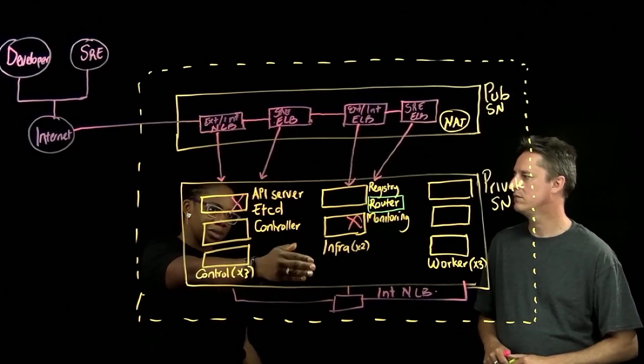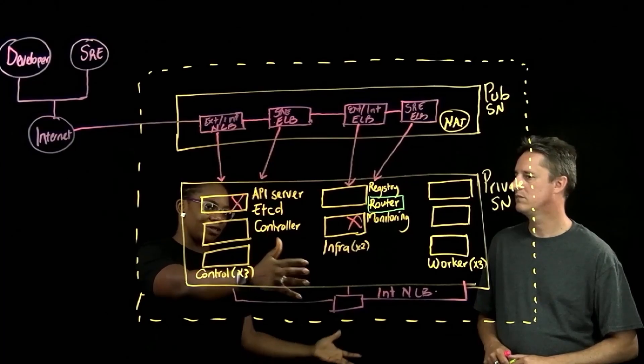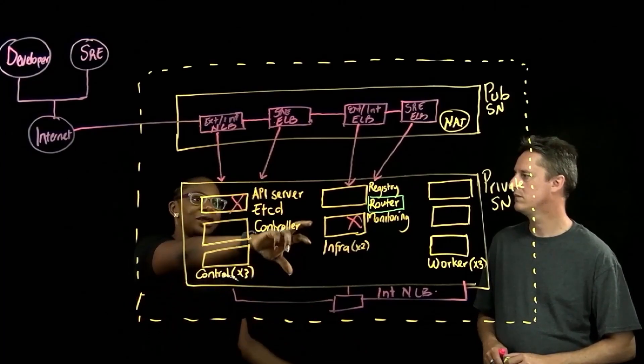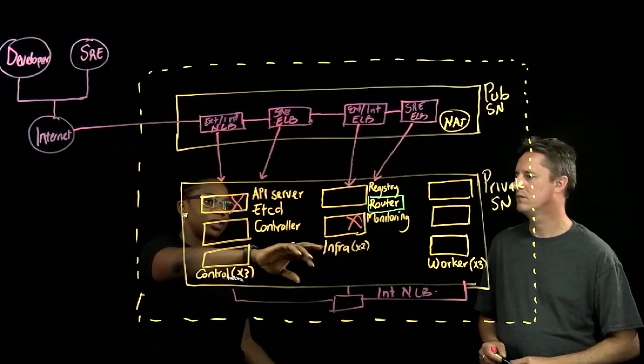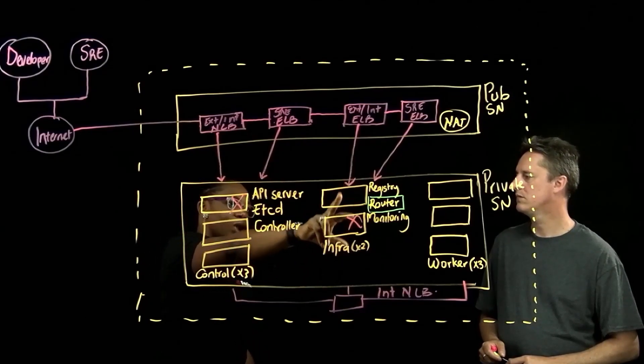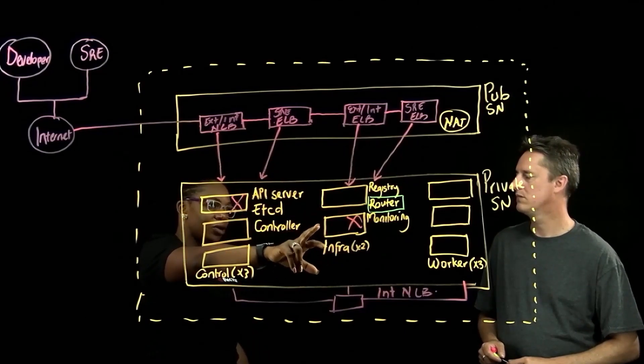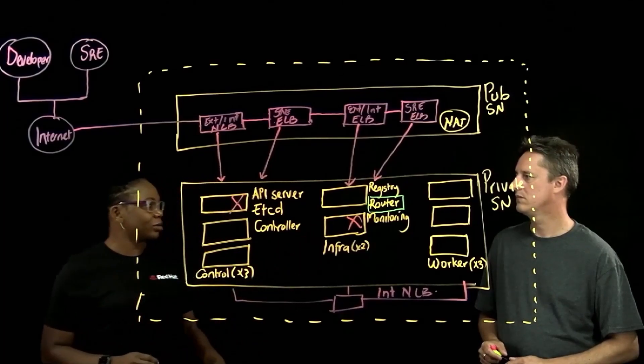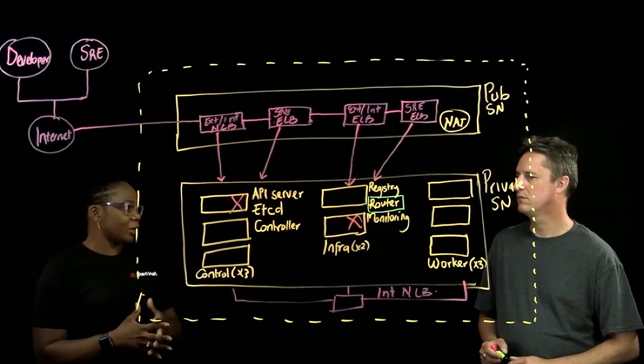So you really don't get to know that there was a failure, and then there's the second infra that gets spun up for you and takes over. So usually when one fails, everything gets routed to the other one, that's the open routing, and then you really don't get to feel the impact of that.